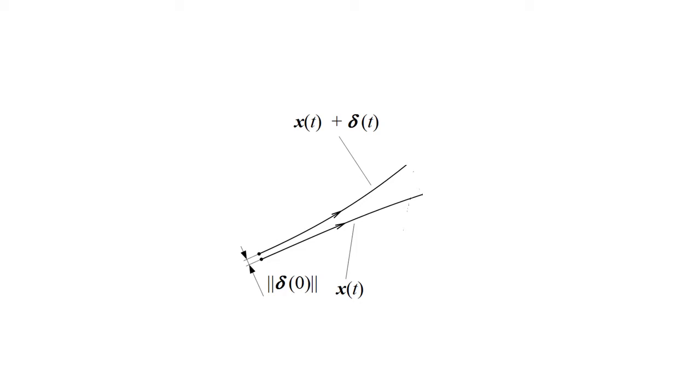Assume that x(t) is a point on the attractor at the time t. Consider a nearby point x(t) + δ(t). δ(0) is a tiny separation vector at time 0.